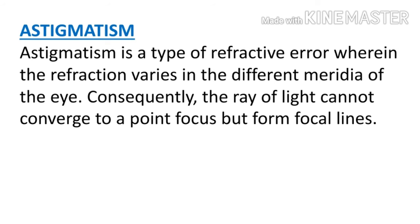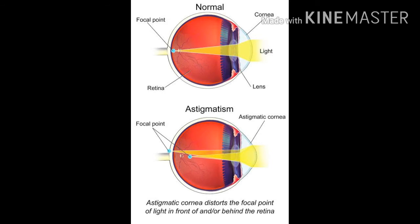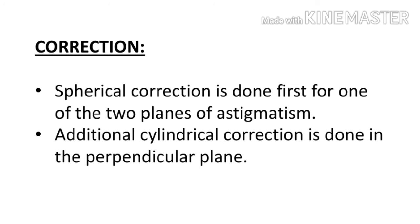Next is astigmatism — a type of refractive error wherein refraction varies in different meridia of the eye. Consequently, rays of light cannot converge to a single point focus, but form focal lines. As seen in the diagram, multiple focal points form — one in front of the retina, one behind it — so light does not focus at one place, causing a blurred image. Correction of astigmatism is done with cylindrical lenses, or sphero-cylindrical lenses as per need.